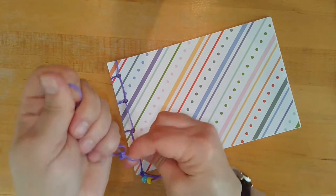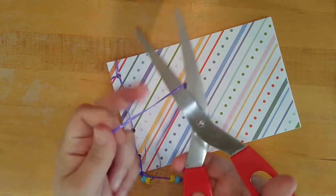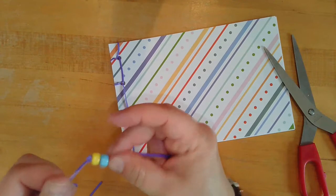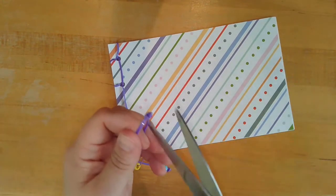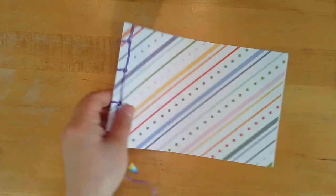So, knotting it three times again, nice and tight. Then I can trim off the excess. Throw that away. And then I have my longer beaded bookmark.